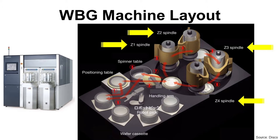This is a wafer backgrinding machine and its internal layout as an example. Detail layout can differ by machine. I will explain based on this layout with 4 spindles. As you can see, there are 4 spindles: G1, G2, G3, and G4.